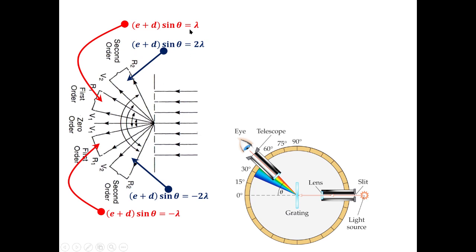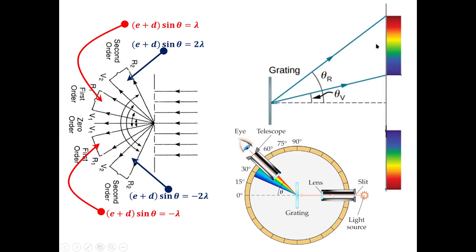As n increases from first order to second order, θ also increases, and θ is a function of λ. If λ is greater, the pattern will be realized at a higher value of θ. So we will get all the spectrum in the first order, in the second order, and in higher orders also.